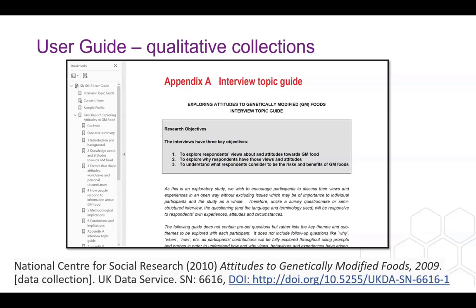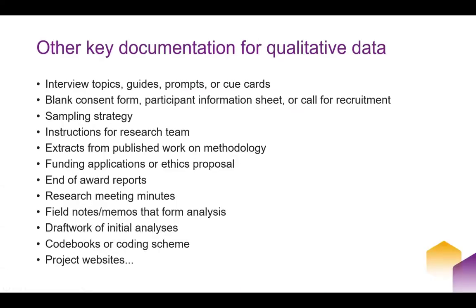Qualitative collections also have user guides. This one shows an interview topic guide along with a final report that was done for the project, and a blank consent form, and then there's more information about the sample in this user guide. Here's another list of some examples of documentation for qualitative work. Basically, it's all the information that you probably create along the way of doing the research, but it's never usually seen outside the research team. This can include interview preparation — including instructions to interviewers, prompts or topic guides, blank consent forms, information sheets, or any other materials that the participant received prior to taking part in the project.